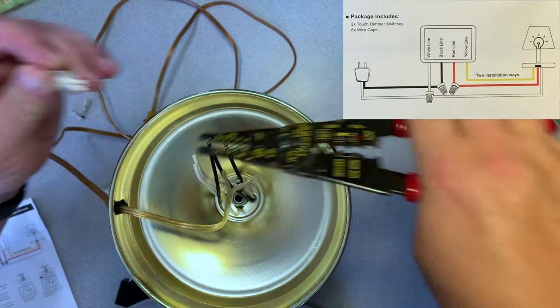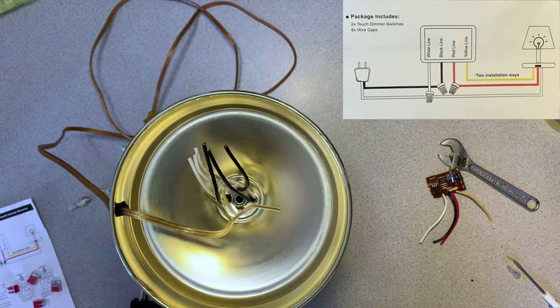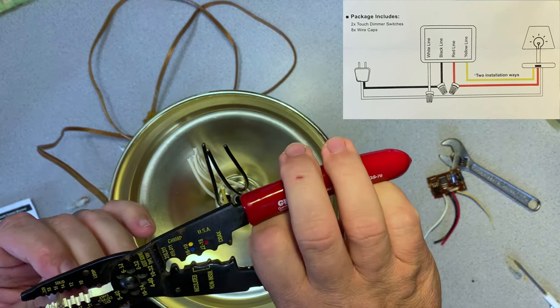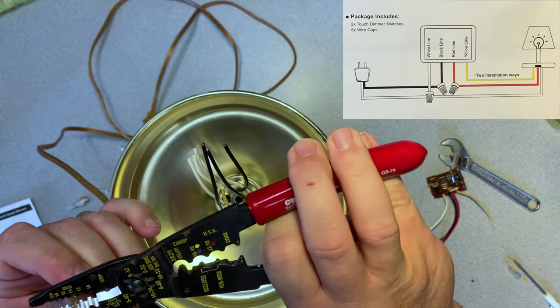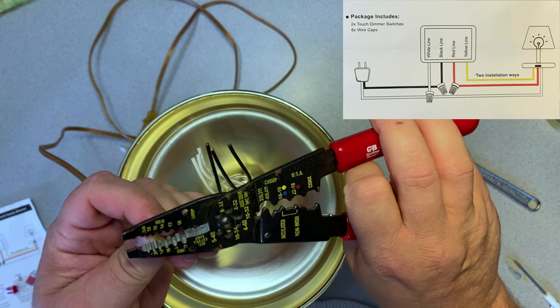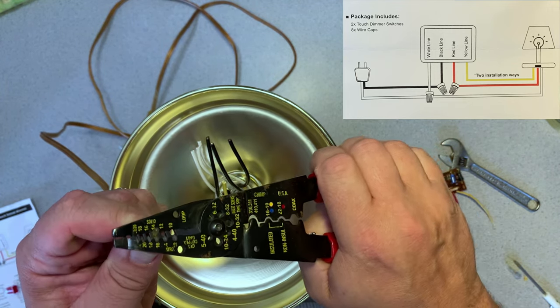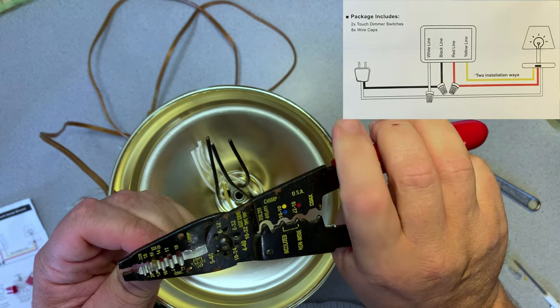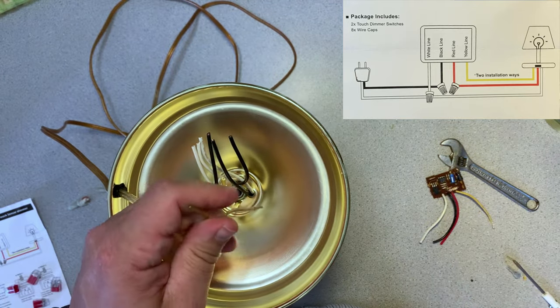This lamp is polarized. You know that by looking at the plug itself. One side is larger than the other and that larger side is the neutral wire. You can tell this because it'll be ribbed or it might have a white stripe on it. But the ribbed side is the larger wire and it goes to the white.